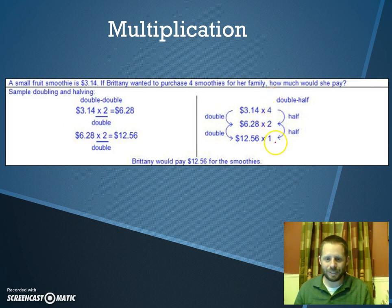You're halving one side, but whenever you half one side, you got to double the other side to keep it so you don't change the value of the problem.